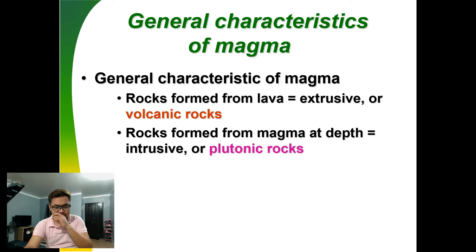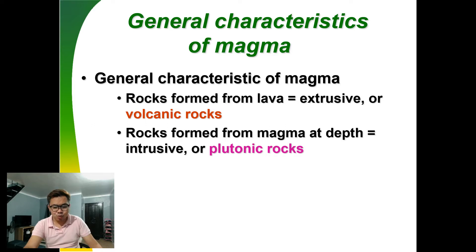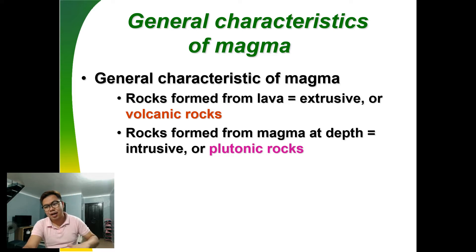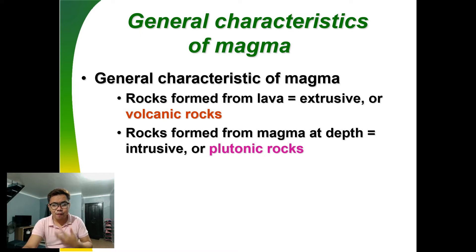General characteristics continued: rocks formed from lava are called extrusive or volcanic rocks. Rocks formed from magma at depth are called intrusive or plutonic rocks. Extrusive rocks form at the ground surface — 'X' for outside. Intrusive rocks form inside the volcano while still as magma, which is why they are also called plutonic rocks.